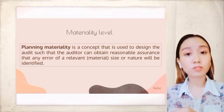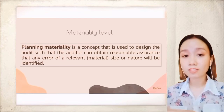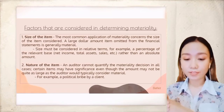What is material is often difficult to determine — it is a matter of professional judgment. However, four factors are generally considered: the size of the item, the nature of the item, the circumstances, and the cost and benefit of auditing the item.